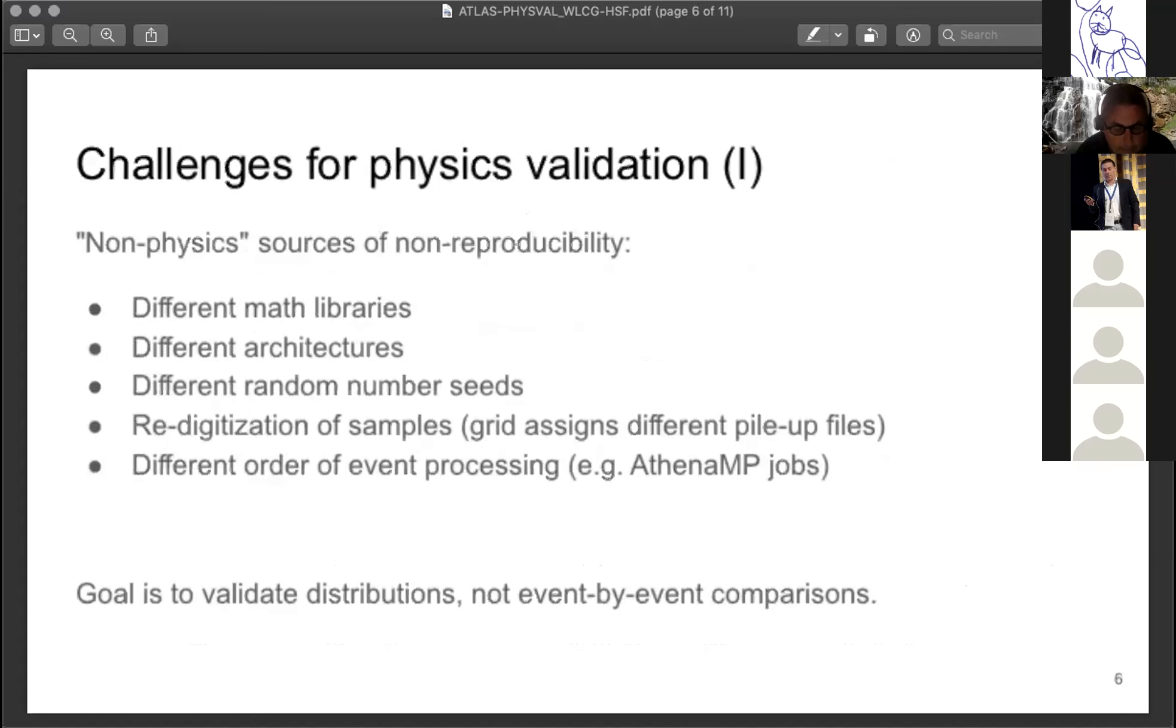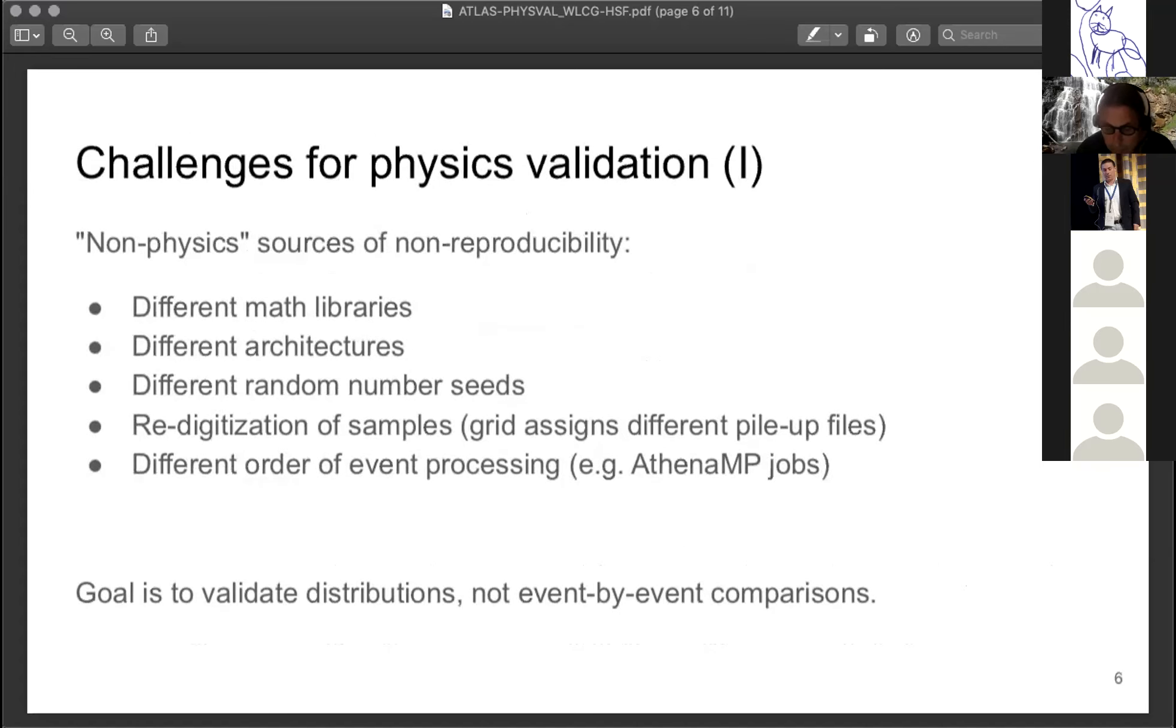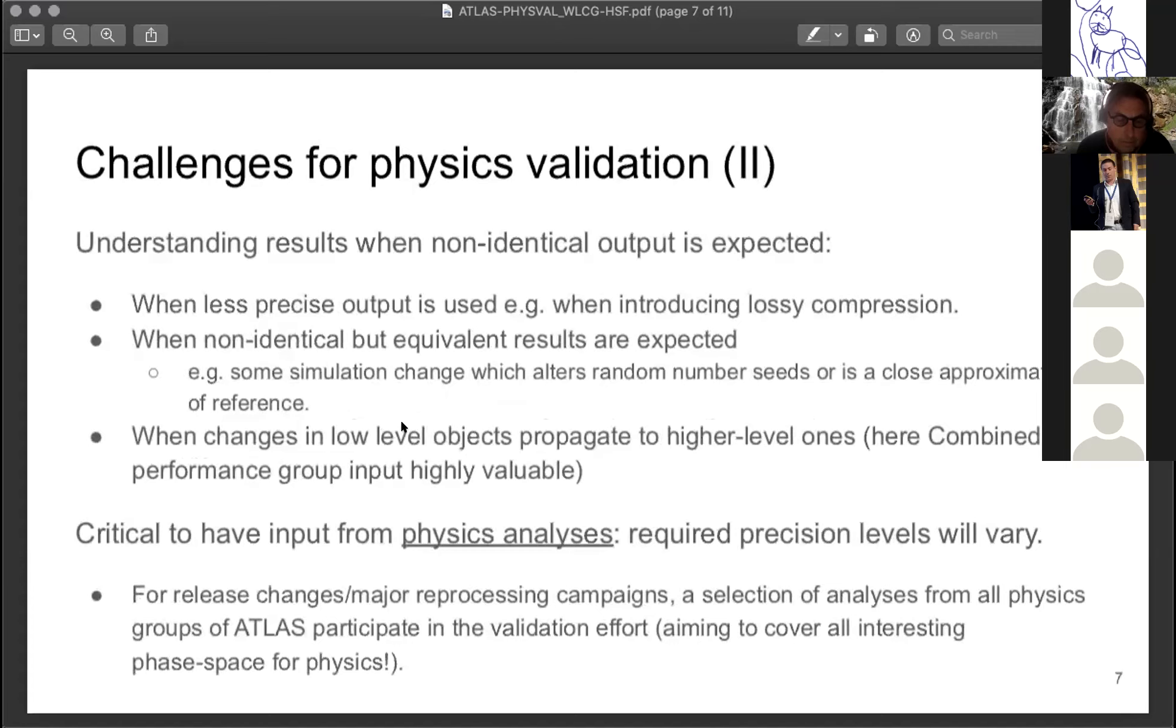To address some of the challenges, the first one is the non-physics or technical sources of non-reproducibility. There are differences expected related to differences in math libraries or compilers and random seeds, and also more practical ones related to the different order of event processing. Specifically when it comes to pile-up overlay, we end up with different pile-up background files on different jobs. This highlights one aspect of physics validation, which is that the goal we have is to validate distributions and not strictly event-by-event comparisons.